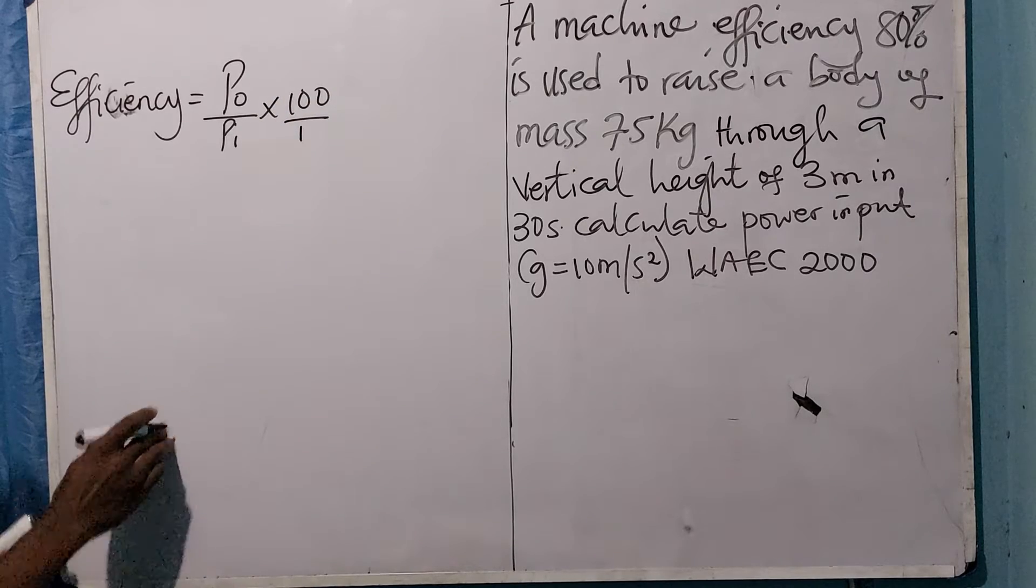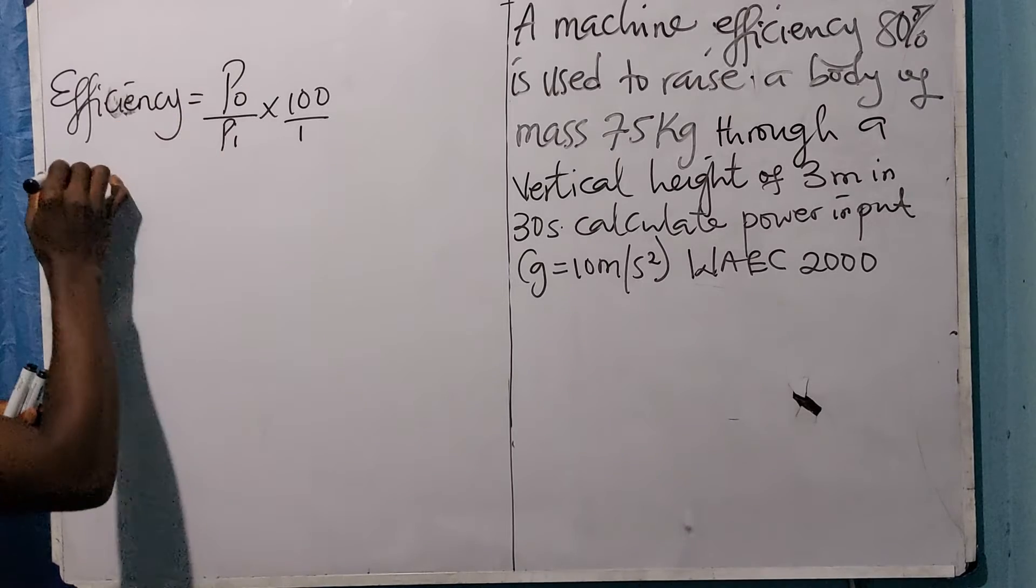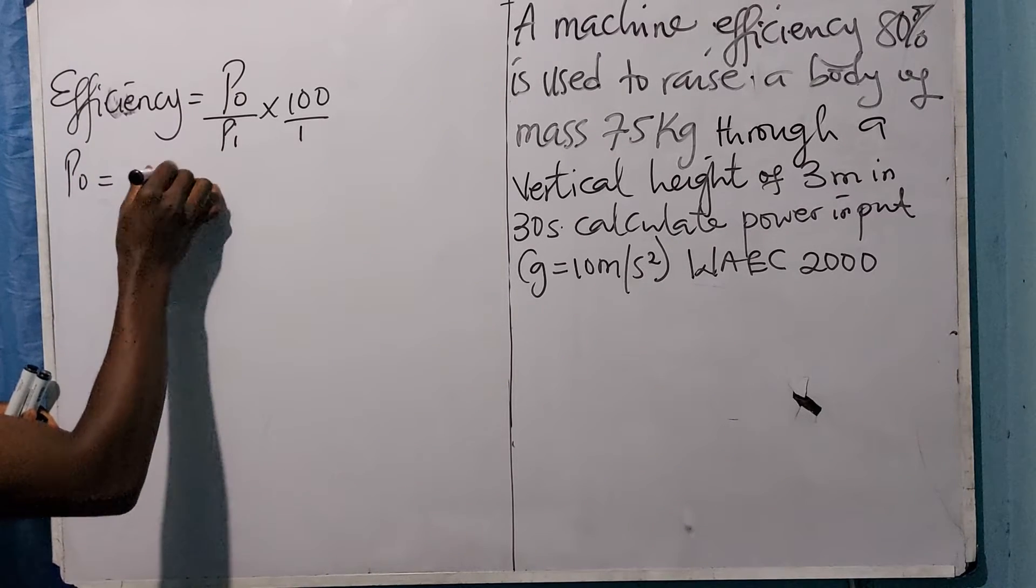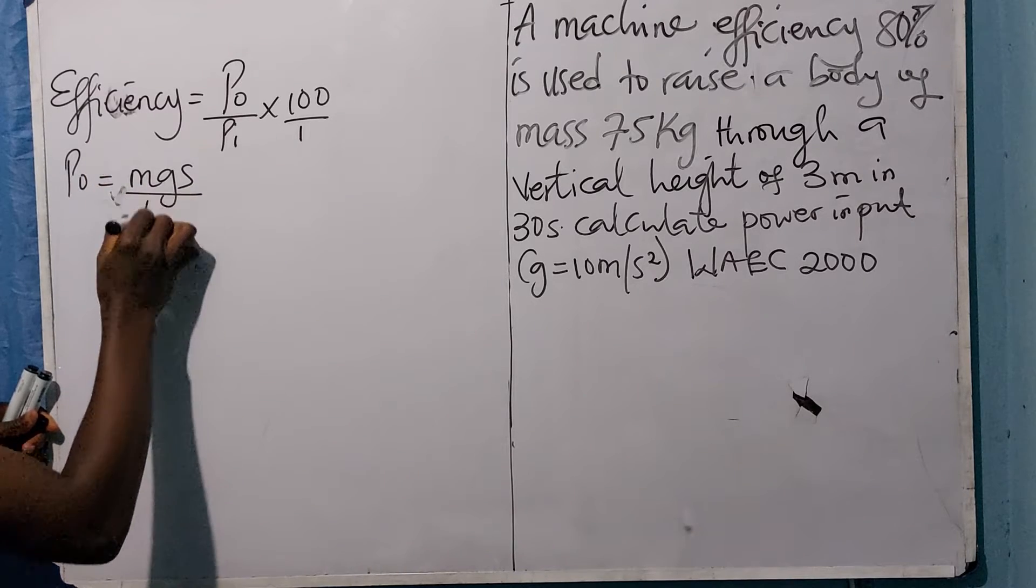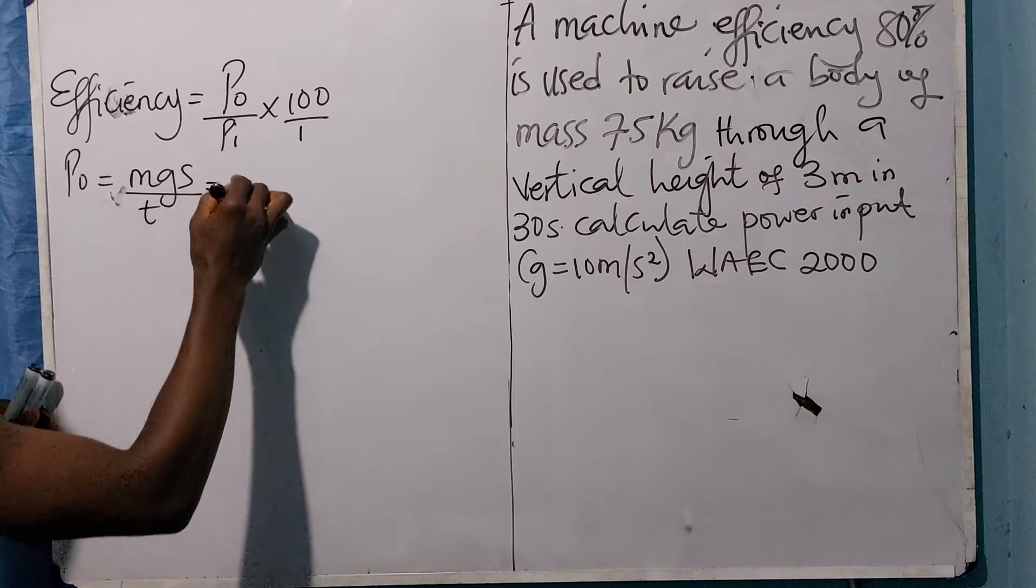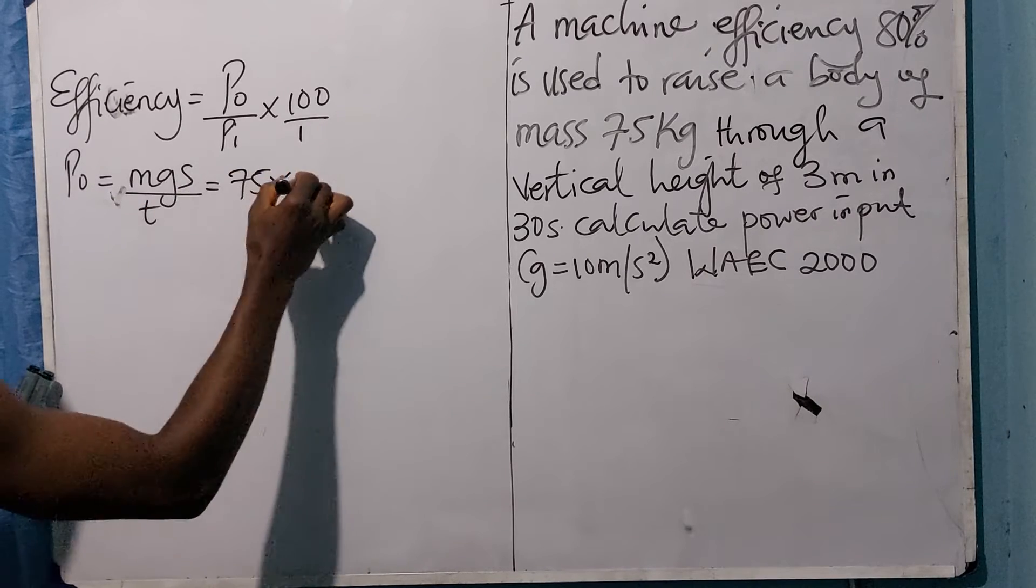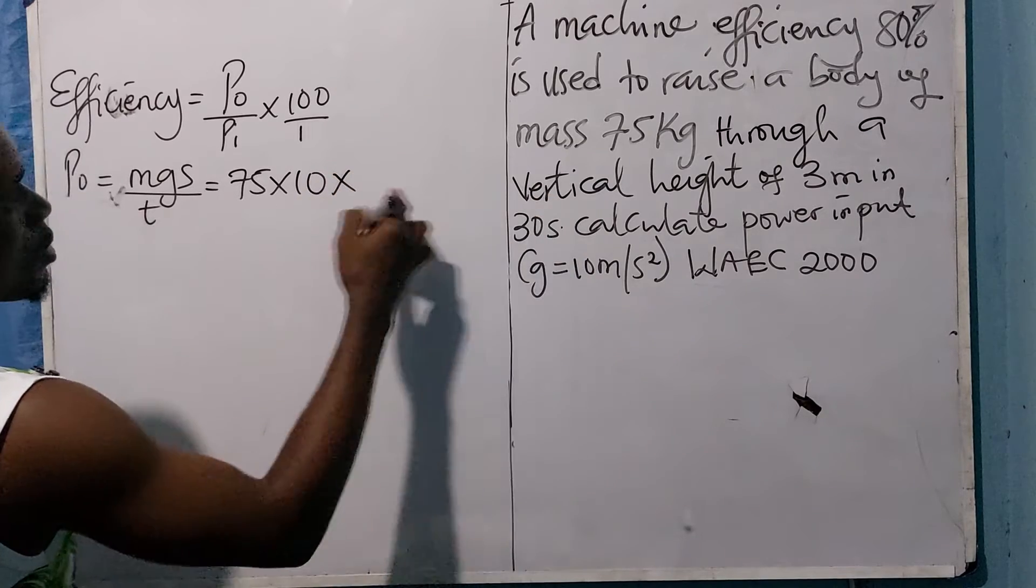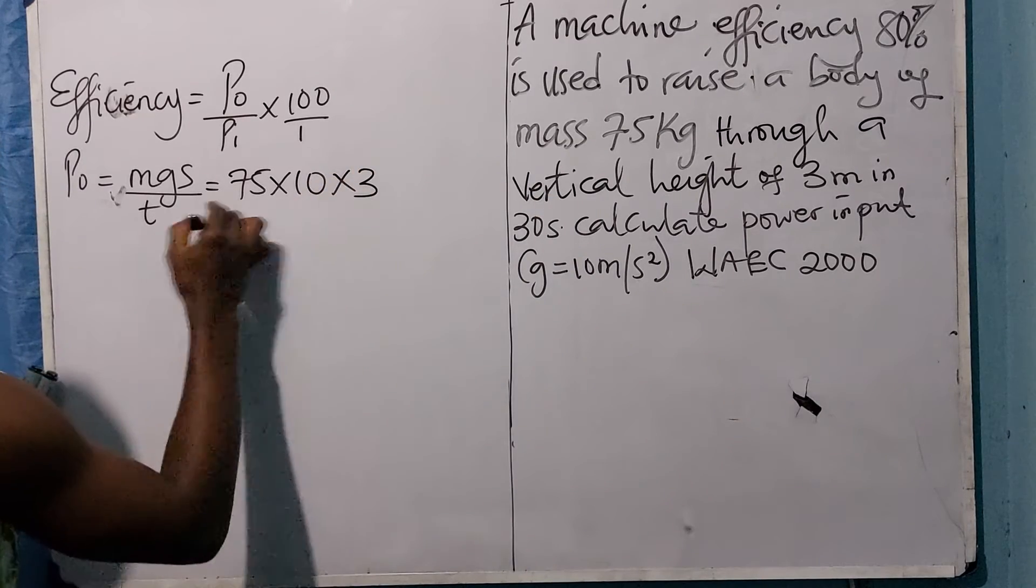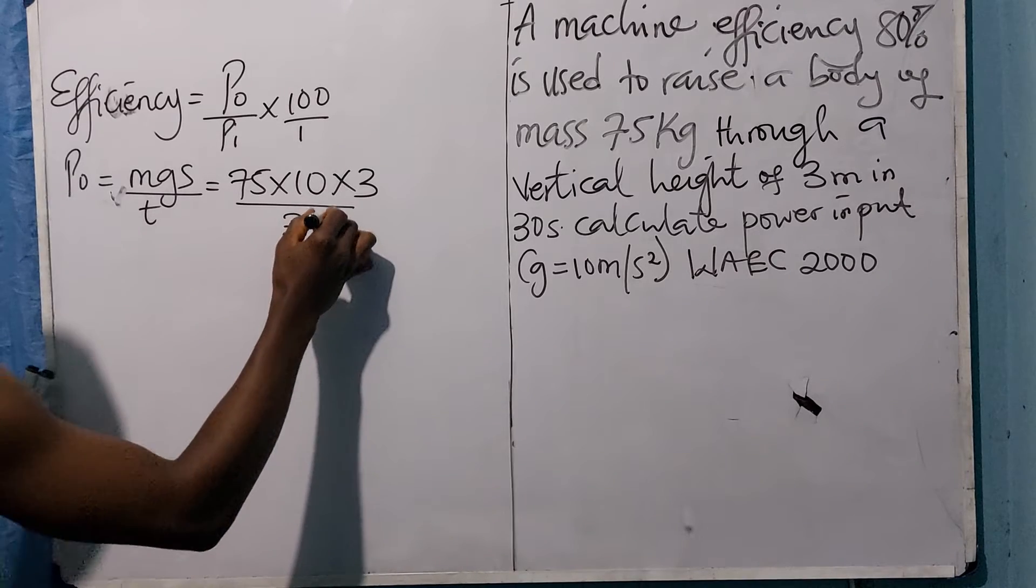Power output is mgs over time. Mass given from the question is 75, gravity is 10 as indicated there, distance is 3, and time is 30. So this is 75 times 10 times 3 divided by 30, which gives us 75 watts as the power output.